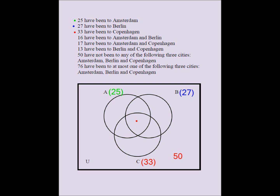It's a good idea to find the number that belongs to the center region where all three circles overlap. We don't have a direct value for it, so we call it x. If the center is x, then the Amsterdam-Berlin only overlap must be 16 minus x, since that football sums to 16. Similarly, this football for Berlin-Copenhagen should add up to 13, so that region must be 13 minus x.